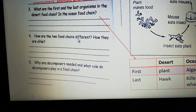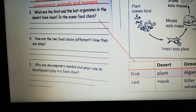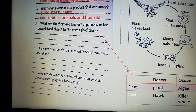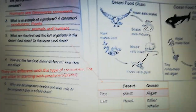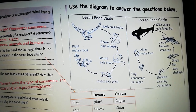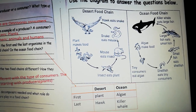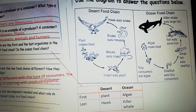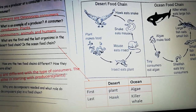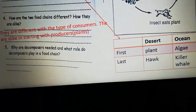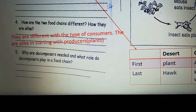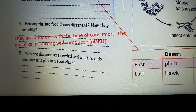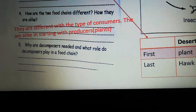How are the two food chains different, and how are they alike? They are different with the type of consumers in each chain, because we have different animals in the desert and different animals in the ocean. While both of them always start with the producer, which is the plant. So they are different with the type of consumers, and they are alike in starting with the producers.